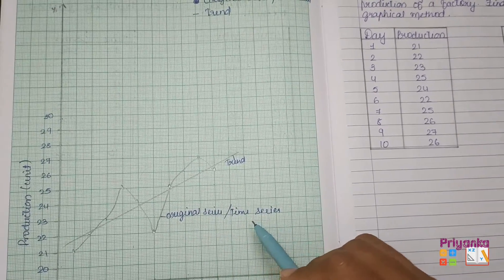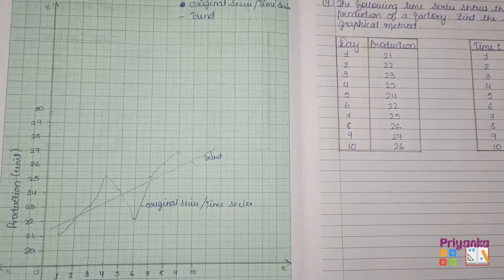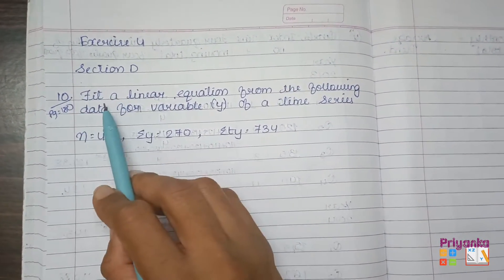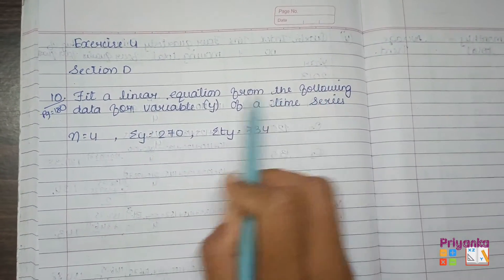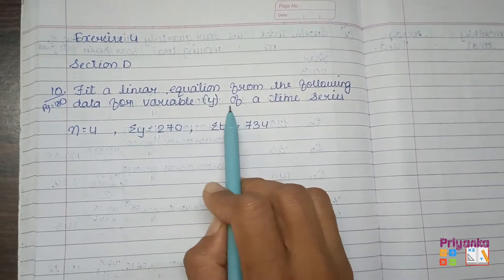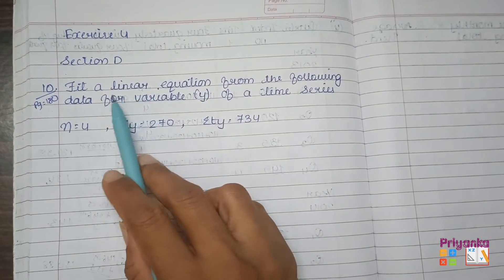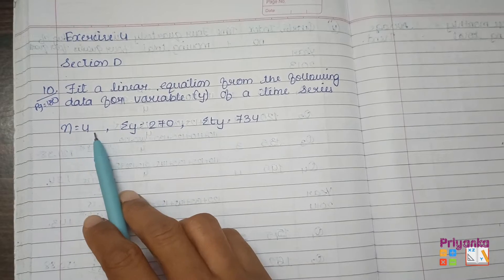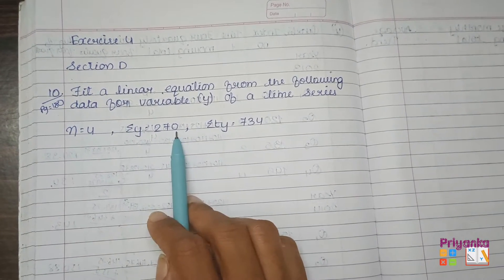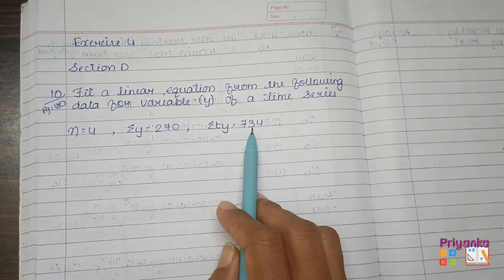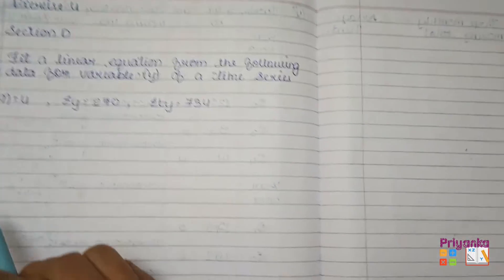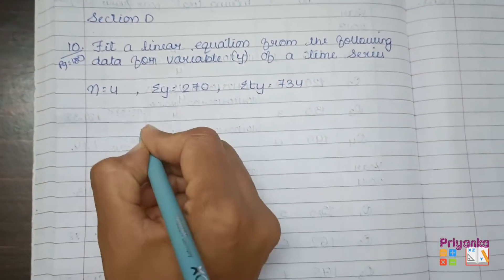Moving to the next question, question number 10, which is given on your page number 180. Fit a linear equation from the following data for variable y of the time series. To find out the linear equation, the information is given that n is 4, sigma y is 270, and sigma ty is 734.